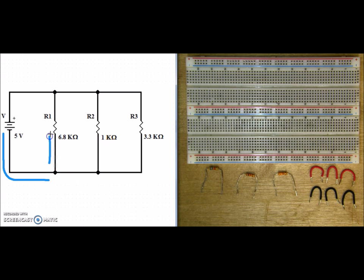Some of the current goes up this branch through R1. The rest of the current continues on, where it meets the second node and splits again. Some of the current will flow through this branch through R2, and then the rest will continue on through R3.